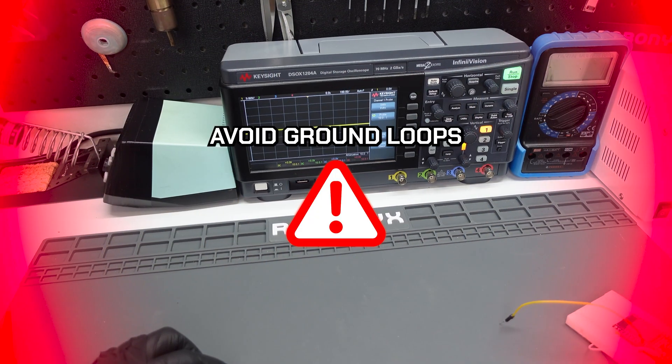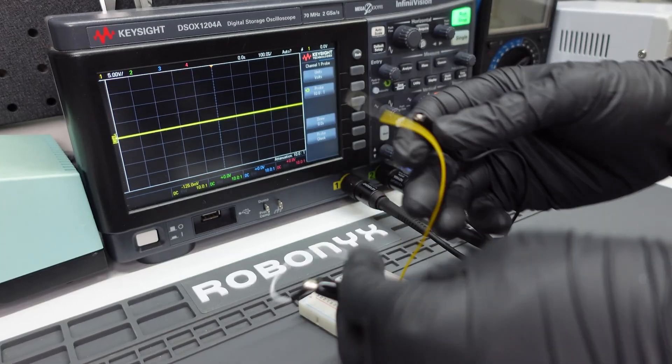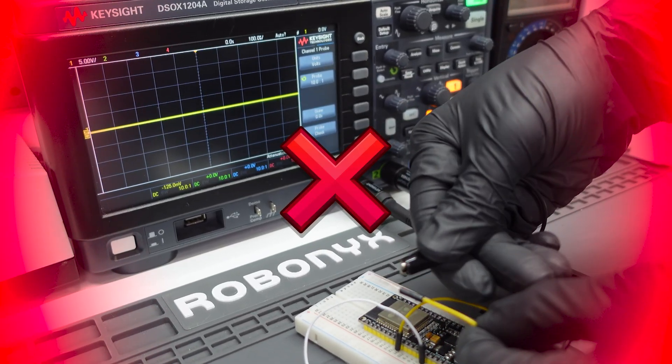After that, you want to make sure to avoid ground loops. Always connect the ground probe clip to the same ground as your circuit, and avoid connecting multiple ground clips in different parts of your circuit.